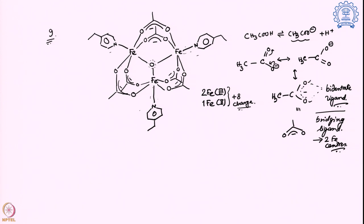What is the overall charge provided by the ligands? There are 6 acetates giving a 6− charge, and 1 oxide in the center giving a 2− charge — altogether −8 charge. So this molecule is charge-balanced and the overall molecule is neutral: 2 iron 3+ and 1 iron 2+.